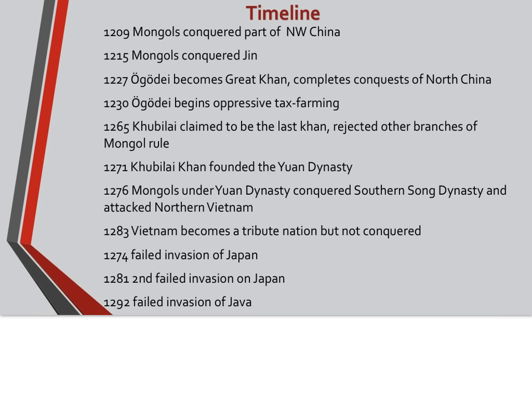Ogedei begins oppressive tax farming, which hurts the peasantry in the countryside. In 1265, Kublai claims to be the last Khan, and unlike the other Khans, he actually rejects other branches of Mongol rule. So China goes on its own trajectory at this point. In 1271, Kublai Khan establishes the Yuan dynasty.